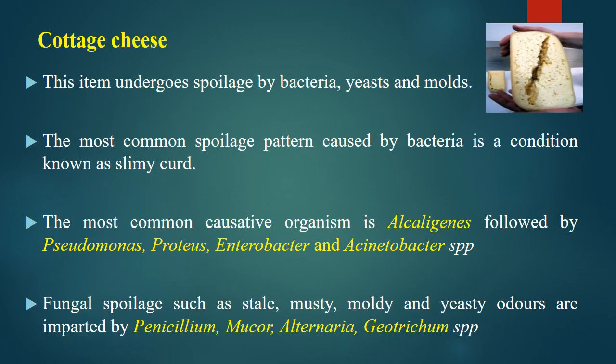Now we will discuss the spoilage of cheese, starting with cottage cheese. Cottage cheese undergoes spoilage by bacteria, yeasts, and molds. The most common spoilage pattern caused by bacteria is a condition known as slimy curd. The most common causative organism is Alcaligenes, followed by Pseudomonas, Proteus, Enterobacter, and Acinetobacter species. Sometimes there can be fungal spoilage producing stale, musty, moldy, and yeasty odors, mainly caused by Penicillium, Mucor, Alternaria, and Geotrichum.